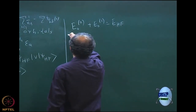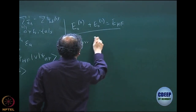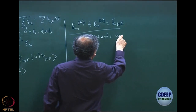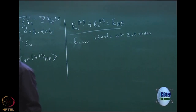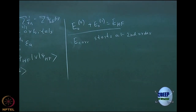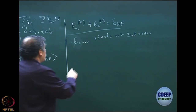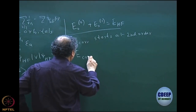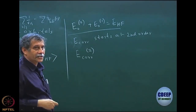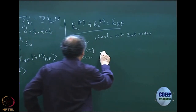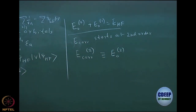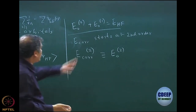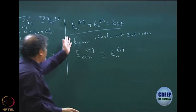By our definition of correlation energy, the correlation energy starts at second order. We went through the second-order perturbation equation and wrote an expression for the correlation energy, which is the correction at second order. E naught 2 is the correlation energy — the first correlation energy contribution, which is at second order — because at E naught 1 there may be a value, but that just adds up to Hartree-Fock.